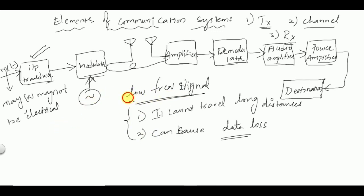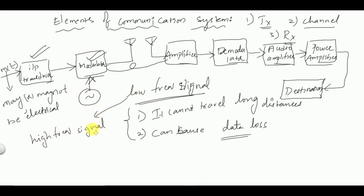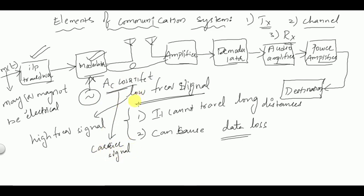To overcome these disadvantages, the low frequency signal is converted into a high frequency signal by the process of modulation. By modulation, the weak message signal is converted into a high frequency signal using a carrier signal. The output of the modulator is called the modulated signal.